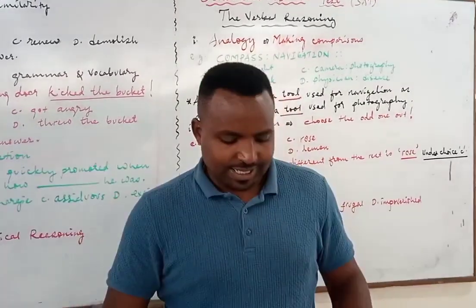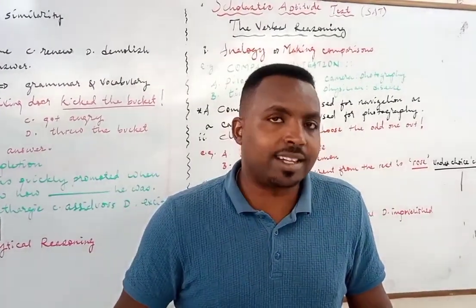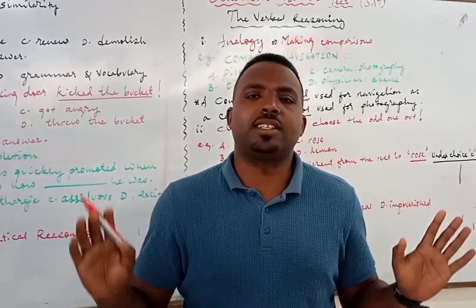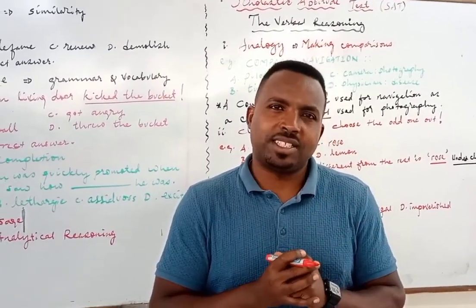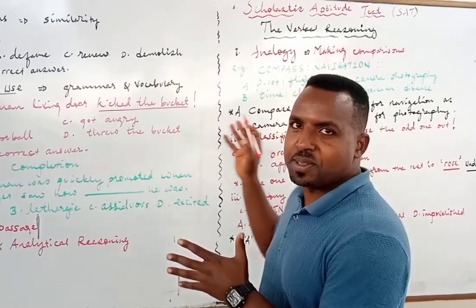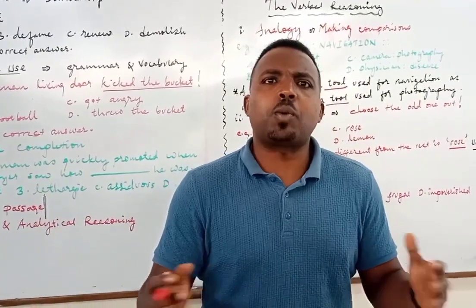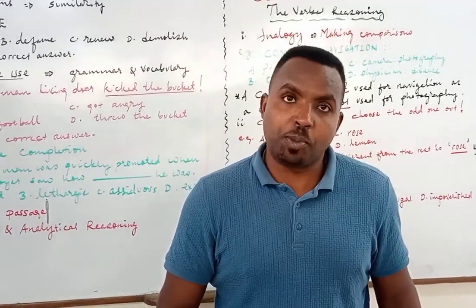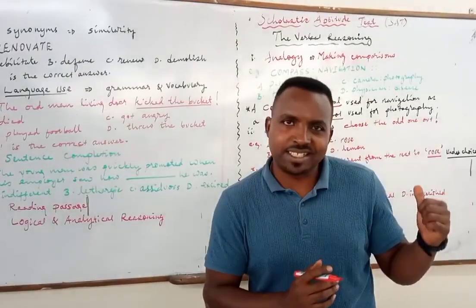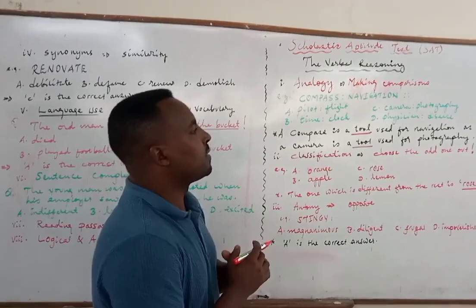Today I brought you the verbal reasoning part. The Ethiopian entrance exam consists of 60 items divided into two sections: the verbal reasoning and the quantitative reasoning. The verbal reasoning refers to the language part, and it has a series of sections. We've been dealing with such things for years, so we are quite at home with it. I hope if you attend this lesson you will benefit from it. Shall we go to the sections?